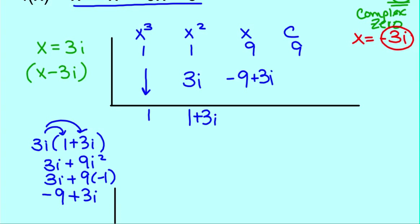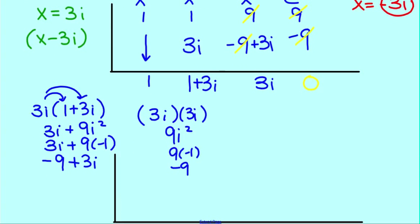Now we add the columns, and the positive 9 and the negative 9 cancel out, and we're left with 3i. Now I'll multiply 3i times 3i, and we get 9i squared. We replace the i squared with a negative 1, and we get negative 9. Now add the columns, 9 plus negative 9 is 0. We wanted our remainder to be 0.